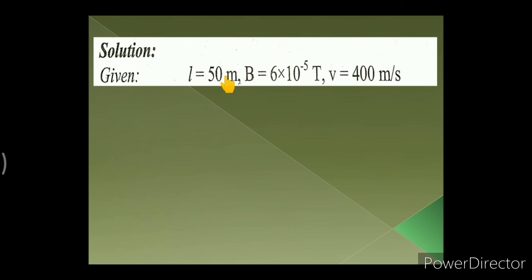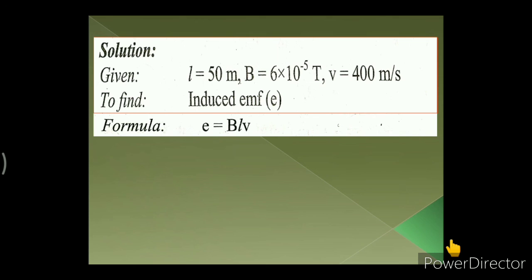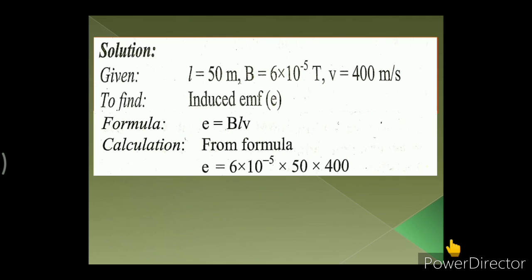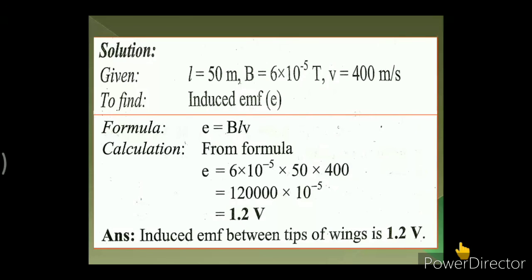Given: l = 50 m, B = 6×10⁻⁵ T, v = 400 m/s. Using E = Blv·sinθ, and since θ = 90° so sin90° = 1, E = Blv = 6×10⁻⁵ × 50 × 400 = 1.2 V. The induced EMF between the tips of the wings is 1.2 volt.